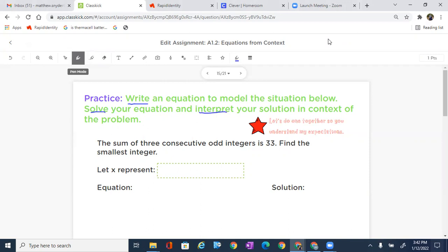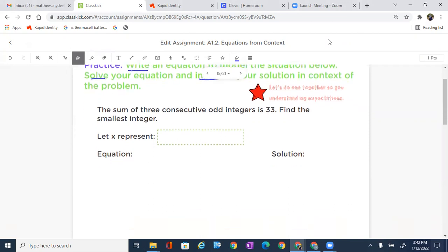It says the sum of three consecutive odd integers is 33. Find the smallest integer. Alright, so let's go ahead and identify some things that are going on in this. So we need to find the sum, which means we're gonna add the numbers.